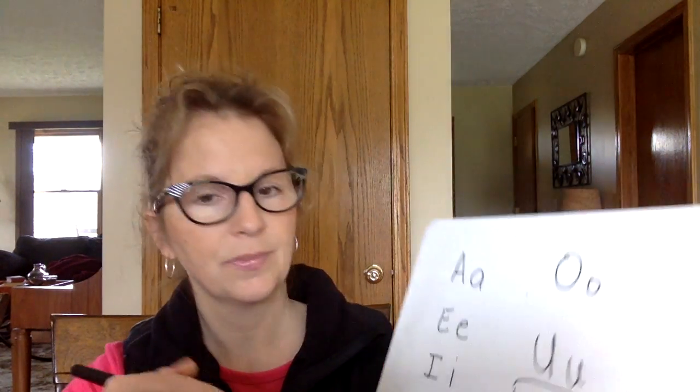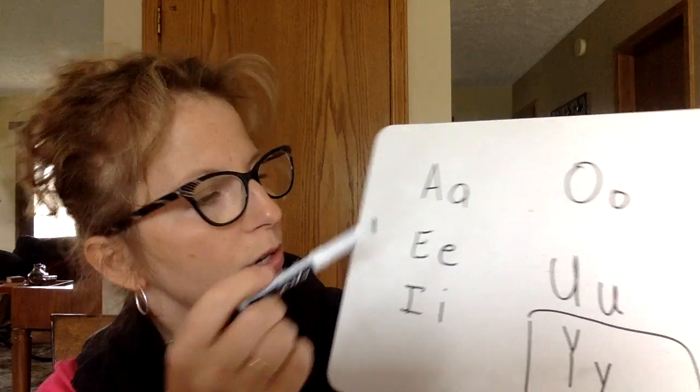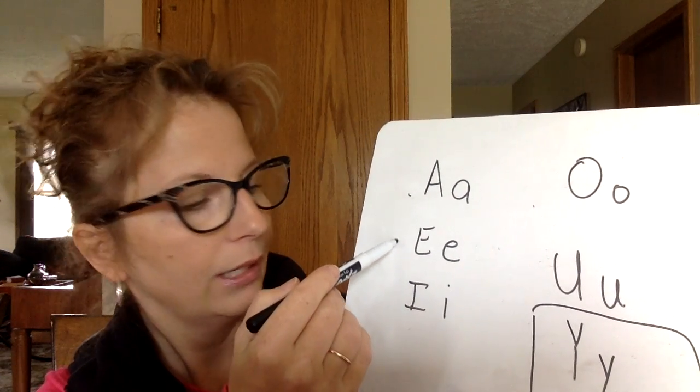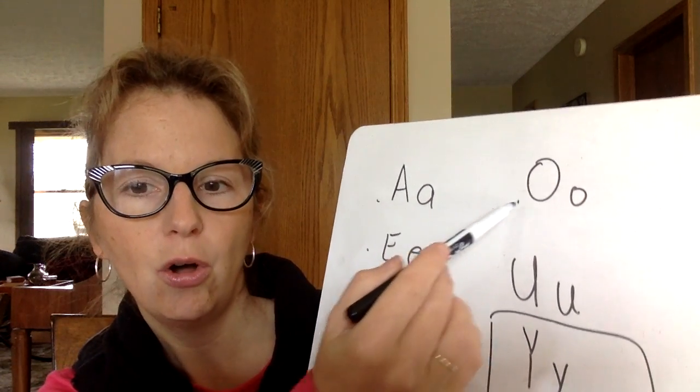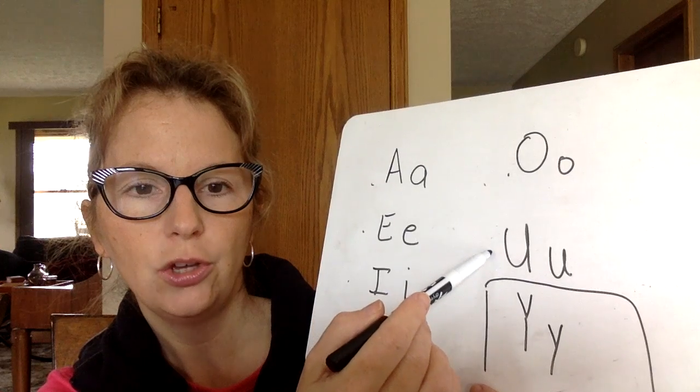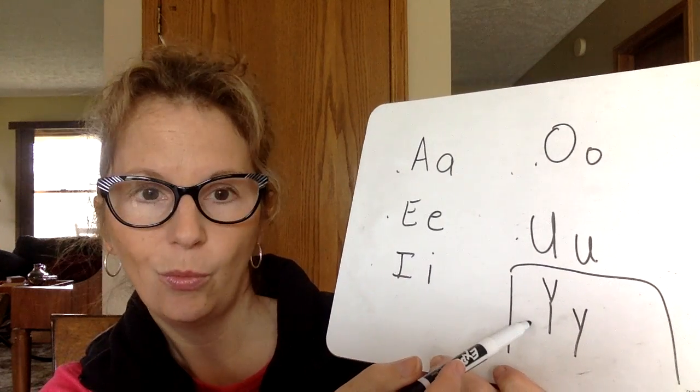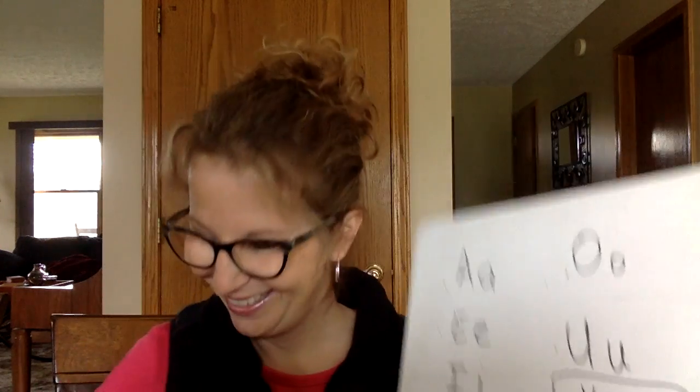If you're not ready, go ahead and hit pause until you finish writing them, then start the video back up. For your vowels, you should have A, E, I, O, U — and sometimes Y. Good job. Go ahead and erase that, or just move down your paper if you're using paper.